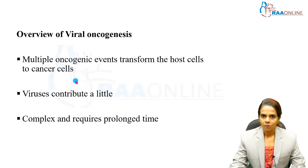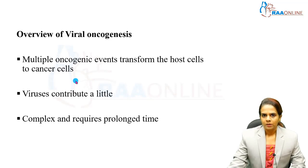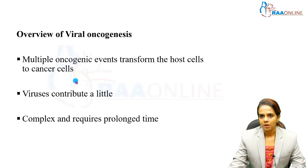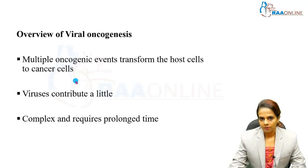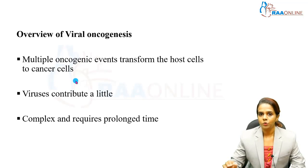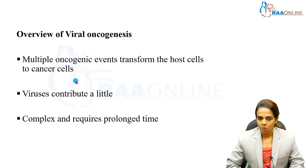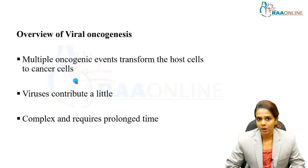Viral oncogenesis is a complex process in which multiple oncogenic events transform host cells into cancer cells. Viruses contribute a little, and the process requires a prolonged time — even decades — because it is complex and requires a lot of time to progress and transform host cells into cancer cells.